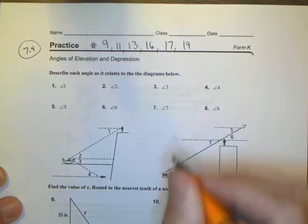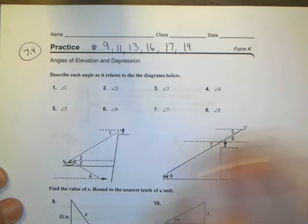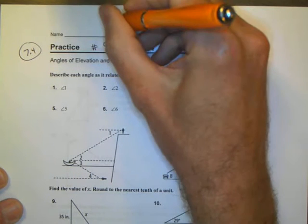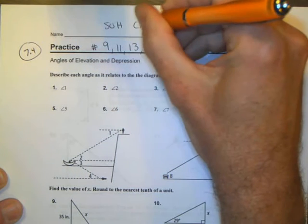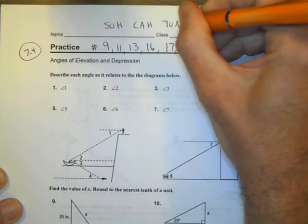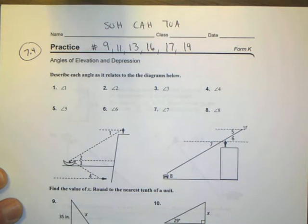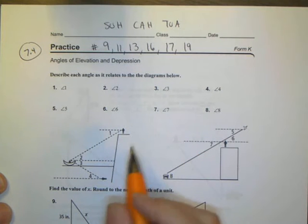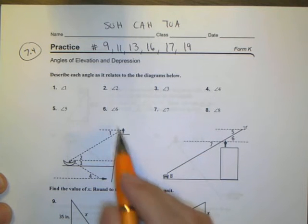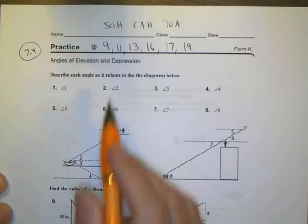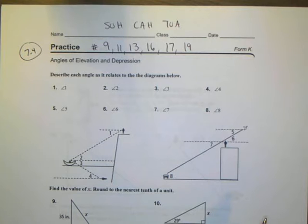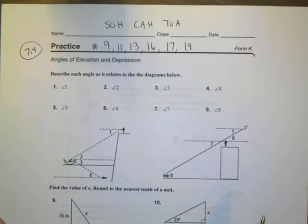As always, remember for this portion here we're going to be using our trig ratios, so that's going to be our SOHCAHTOA, so always write that down. The first question here I'm not going to go over, this is basically you describing what is a different angle, so is it the angle of depression, elevation, and what it matches there. I'm going to let you figure that out.